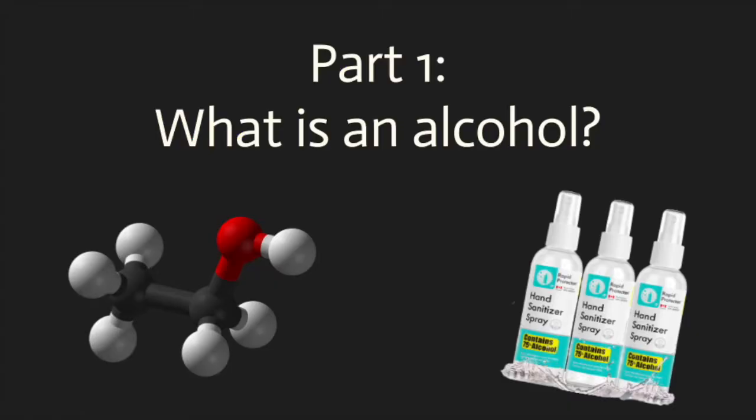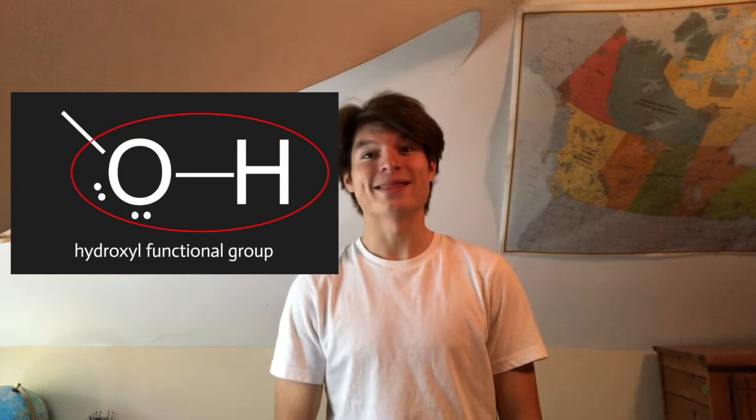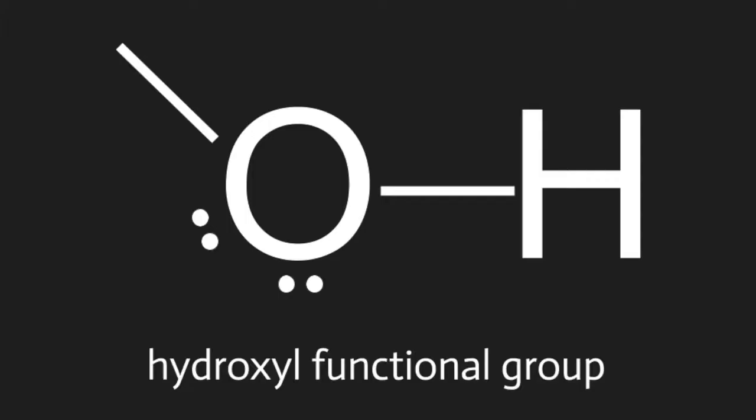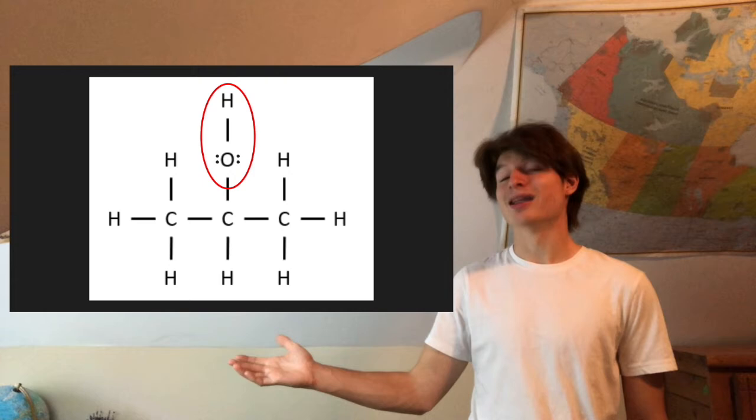What is an alcohol? Alcohols are organic molecules that have one or more OH, or hydroxyl groups, present in them, where an oxygen is directly bound to a hydrogen, and that same oxygen is also bound to one of the carbons in the organic molecule. The oxygen also needs to have two pairs of lone electrons to have a full octet. So as an example, this molecule here is an alcohol, because there is at least one — in this case exactly one — hydroxyl group present, and because it's an organic molecule filled with carbons.